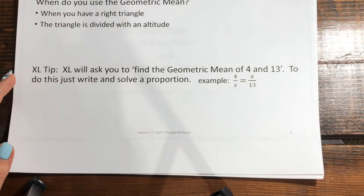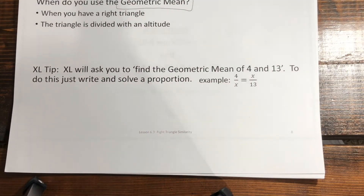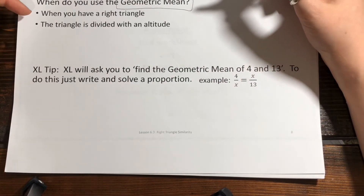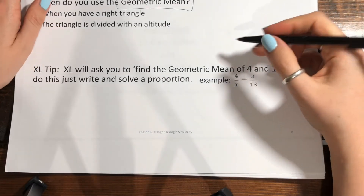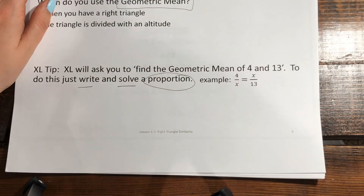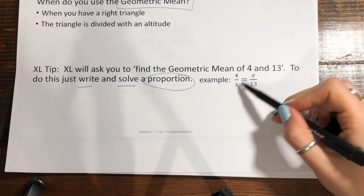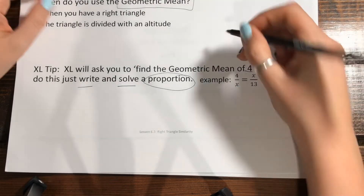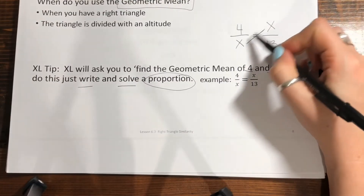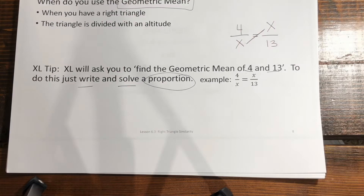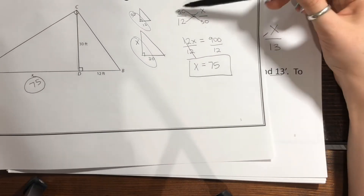These problems will also ask you about the geometric mean. The geometric mean is essentially setting up that proportion — that fraction — which is what we've been doing this whole time. On Math Excel it might say 'find the geometric mean of 4 and 13,' meaning write and solve a proportion. A proportion is a fraction equal to a fraction, so the geometric mean uses that matching diagonal: 4 over x equals x over 13.